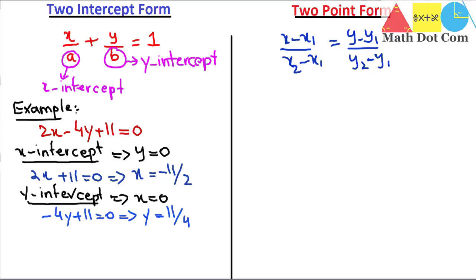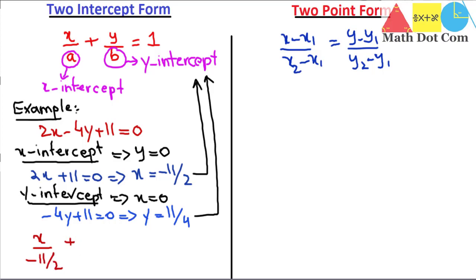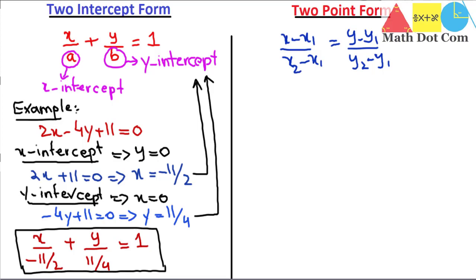Now we just put these values into the standard form. In the two-intercept form, x divided by a — where a is the x-intercept, which is minus 11 by 2 — plus y divided by the y-intercept, which is 11 by 4, equals 1. This is the linear equation in two-intercept form. This is how you get the linear equation in two-intercept form — it is quite easy.